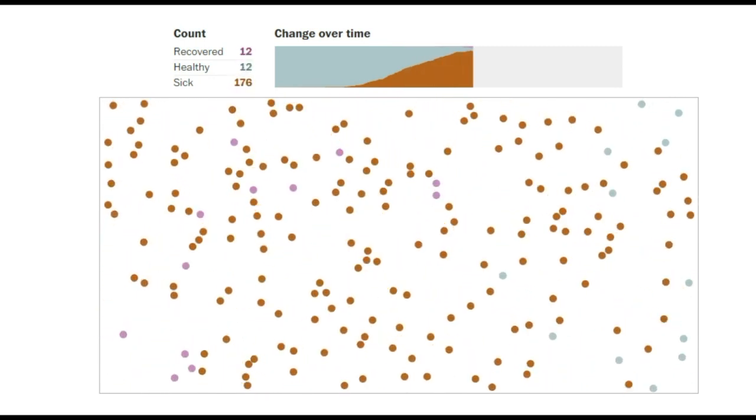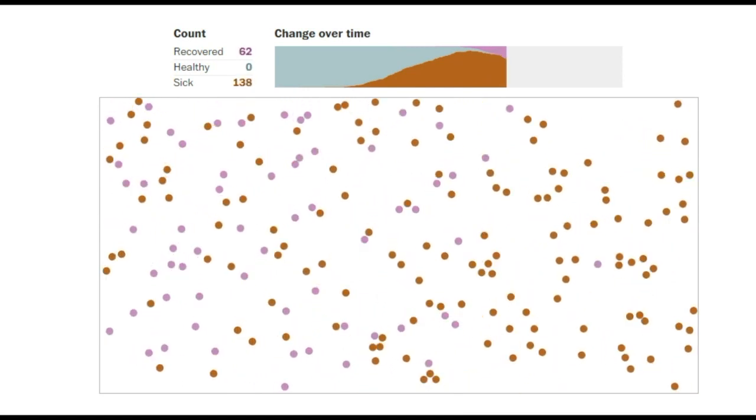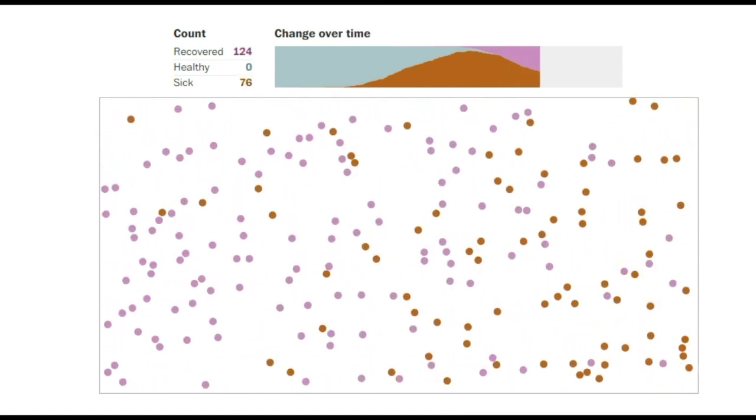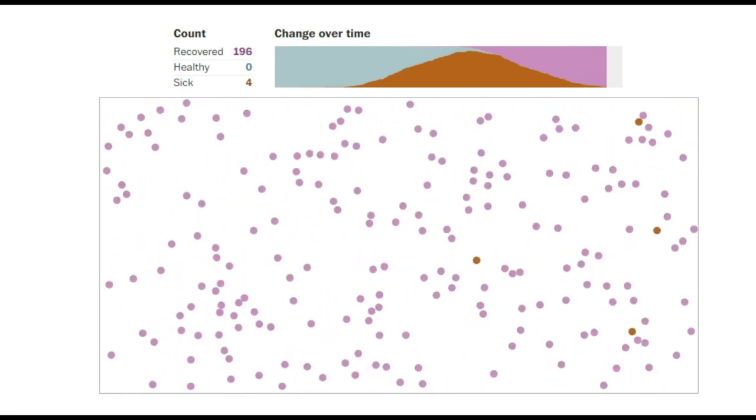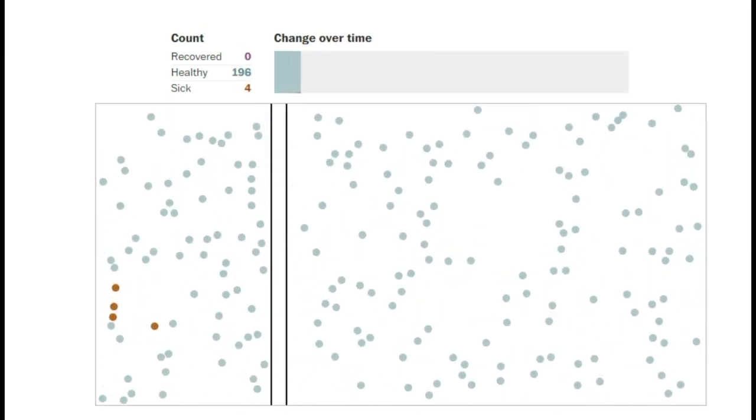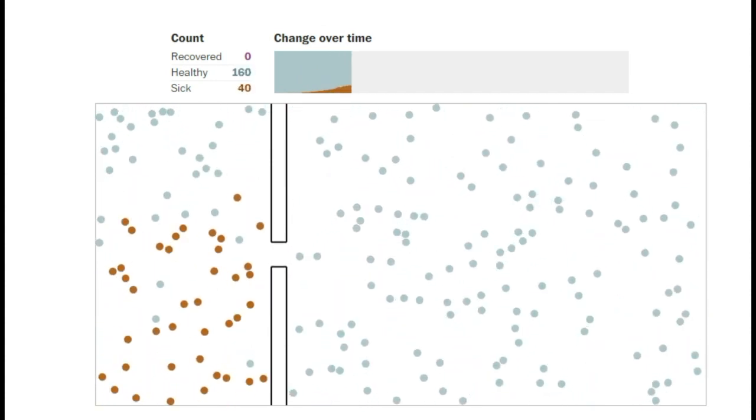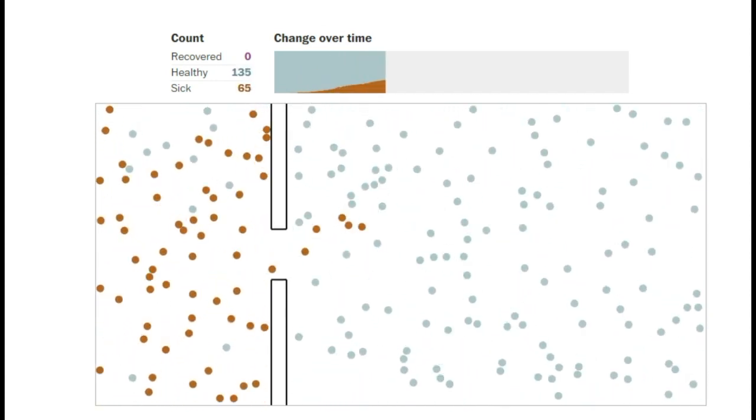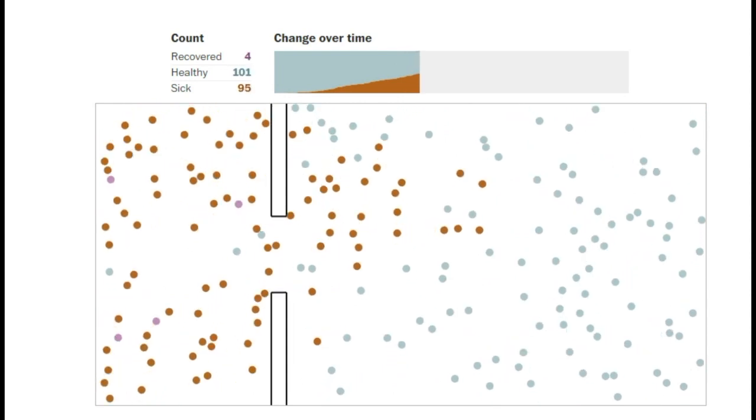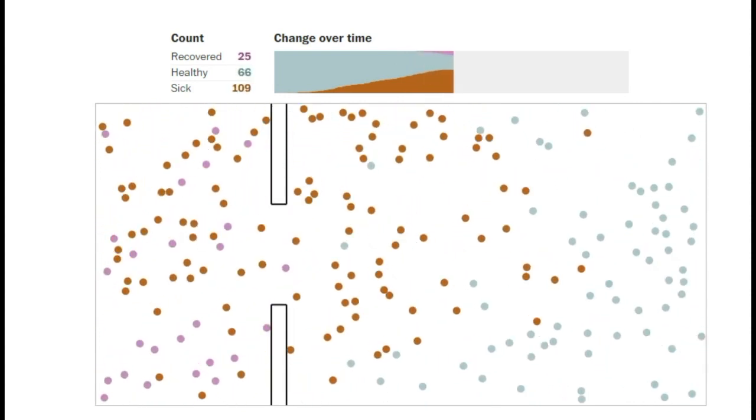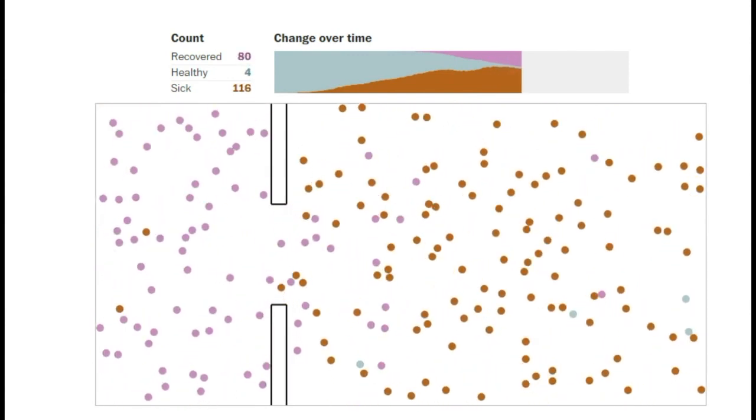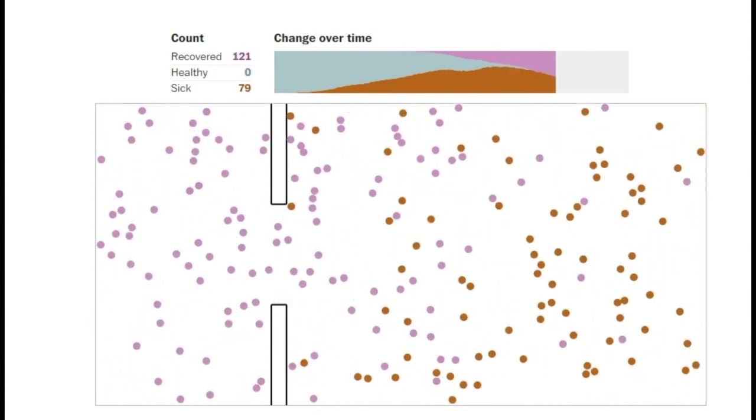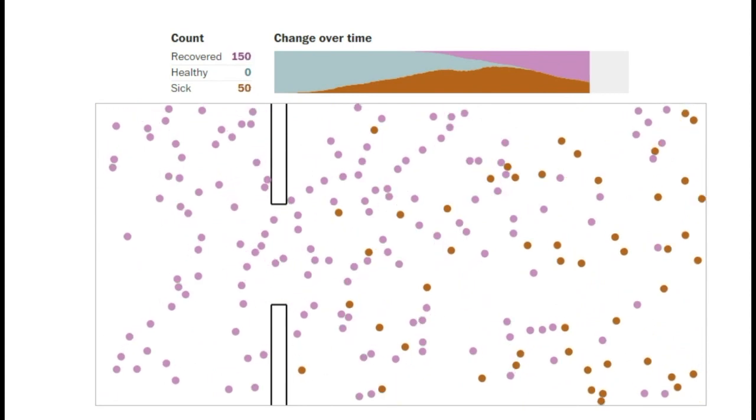You can see that the spread starts slow, then goes up very quickly, and then goes down again when there's more and more people that are recovered and immune. Now let's look at a simulation where they tried to isolate the sick people from the healthy people. It is very difficult to completely isolate the sick from the healthy. When there's even a small gap in isolation, the disease will spread very quickly in the rest of the population.